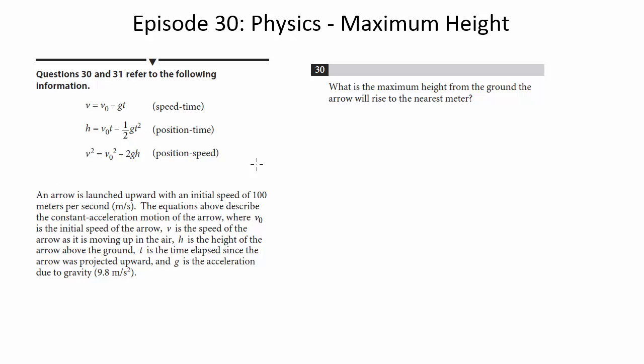An arrow is launched upward with an initial speed of 100 meters per second. So here's an arrow, it's launched upward with an initial speed of 100 meters per second. The equations above describe the constant acceleration motion of the arrow, where V0 is the initial speed of the arrow, so this is 100.